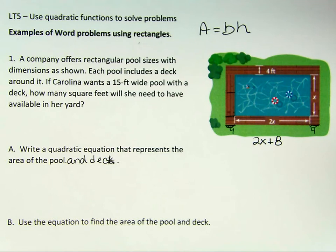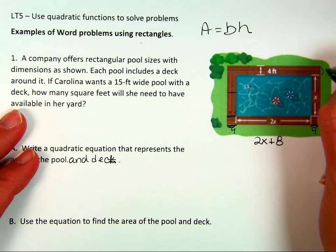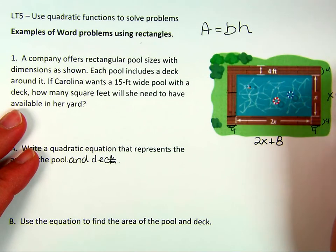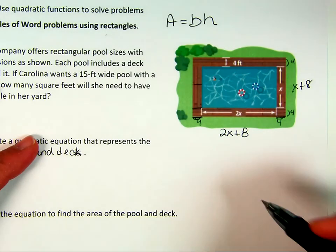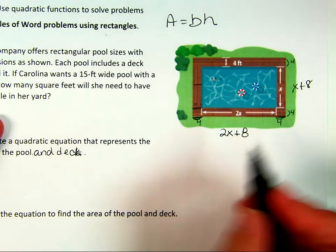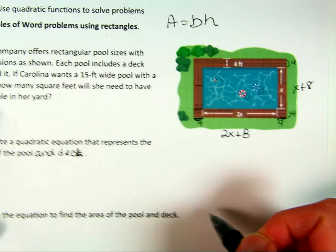We're going to do the same thing for the width. So we know that this much is 4, and we know that this much is 4, so what is this whole side? It's going to be x plus 4 plus 4, which is going to be x plus 8. And so, to find our model for the area, we're going to take 2x plus 8 and multiply it by x plus 8.